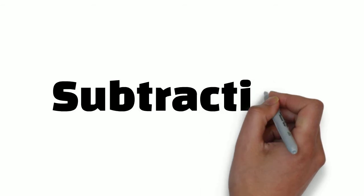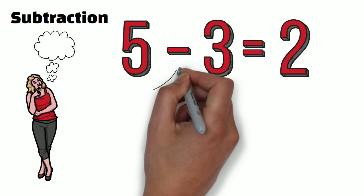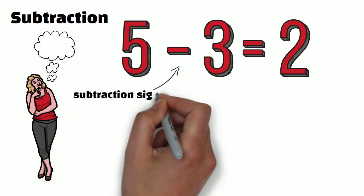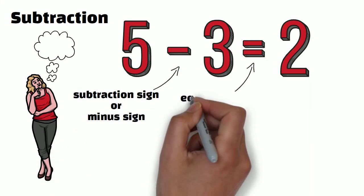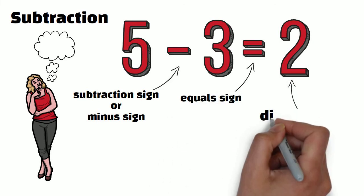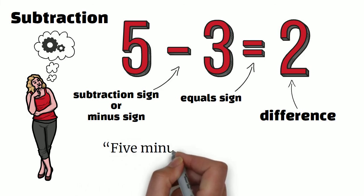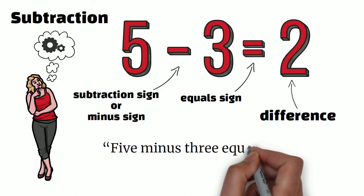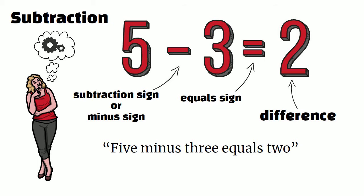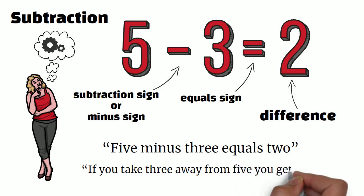The symbols used in subtraction are the subtraction sign, or the minus sign, and again the equals sign. The result of a subtraction equation is called a difference. We read the whole equation like this: '5 minus 3 equals 2.' Or if you wanted to explain this to someone, you could say 'if you take 3 away from 5, you get 2.'